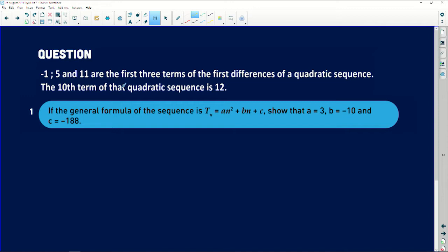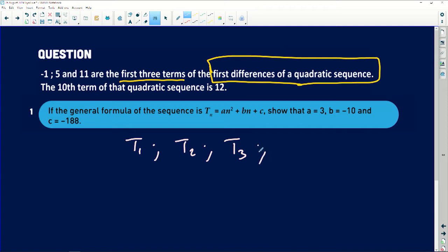Now guys, there's something important here. They're saying first three terms, but of what? Of the first difference of a quadratic sequence. Now what does that mean? Before I can go anywhere, I will say it means I have T₁, I've got T₂, I have T₃, I have T₄ continuing like that. And then from there I know that the first difference is -1, the second difference there will be 5, the third difference there will be 11. So that's what they are trying to say in simple terms.